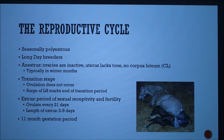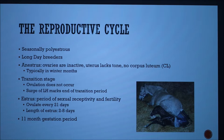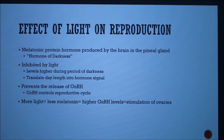Anestrus is when the ovaries are inactive, the uterus lacks tone, and there is no corpus luteum (CL). This is typically in the winter months. The mare then usually goes through a transition stage, during which ovulation does not occur. This stage ends when there is a surge of LH (luteinizing hormone), which marks the end of the transition period. The mare then goes into estrus, a period of sexual receptivity and fertility. Mares ovulate every 21 days, the length of estrus is 2 to 8 days, and the gestation period is 11 months.